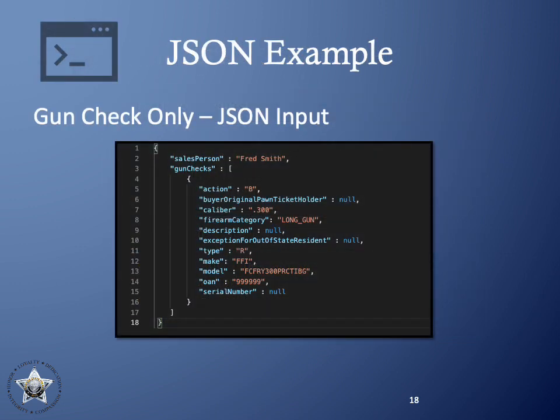Here is an example of JSON representing data for a firearm. There are a few things to note about how the API uses JSON. All single objects need to be surrounded with curly braces — for example, the main request object. All collections of objects need to be surrounded by square brackets — for example, the gun checks collection requires square brackets even if only a single firearm is specified. Lastly, all property names must be surrounded in double quotes and are case sensitive.